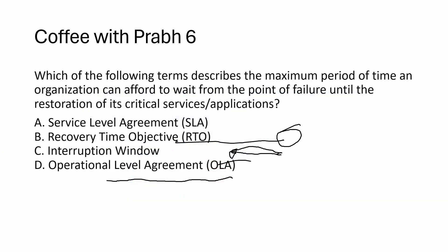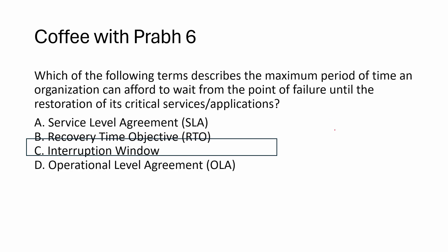The question asks which term describes the maximum period of time from failure to restoration. Option A, SLA: a contract between service provider and customer defining service levels — it can specify downtime tolerance but doesn't specifically define the maximum tolerable period between failure and restoration. Option B, RTO: the target duration within which business processes must be restored — it's about the objective for recovery, not the maximum tolerable downtime. Option D, OLA: supports SLA but doesn't specifically address the maximum tolerable window. The answer is interruption window — the maximum time we can sustain, beyond which risk cannot be recovered.